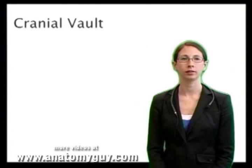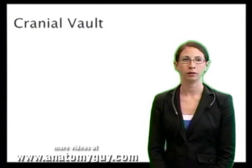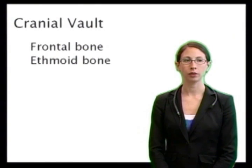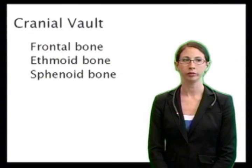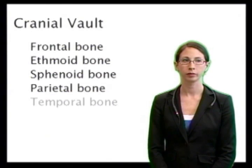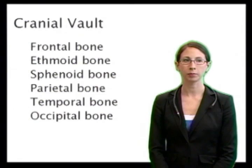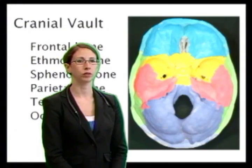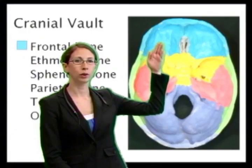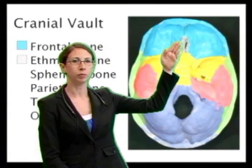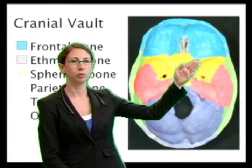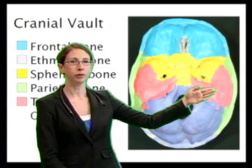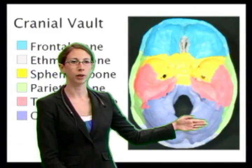We will now identify the six bones of the cranial vault, the area of the skull where the brain is housed. These bones include the frontal bone, the ethmoid bone, the sphenoid bone, the parietal bone, the temporal bone, and the occipital bone. In the diagram, the top of the screen is anterior and the bottom is posterior. The frontal bone is in blue, the ethmoid bone in gray, the sphenoid bone in yellow, the parietal bone in green, the temporal bone in orange, and the occipital bone in purple.